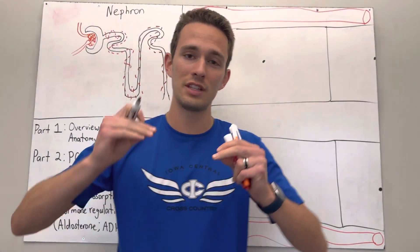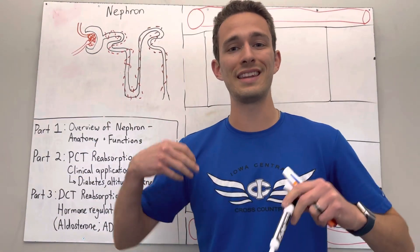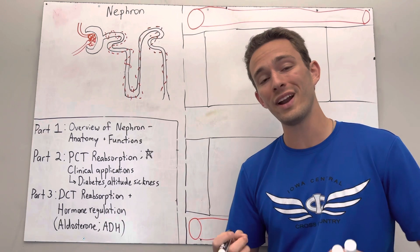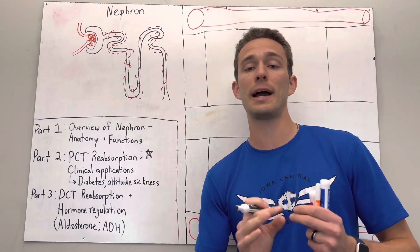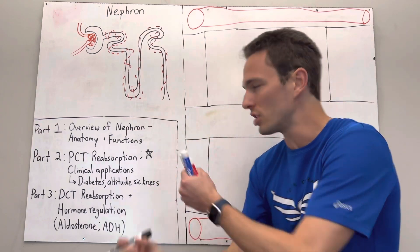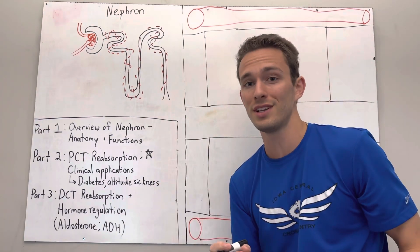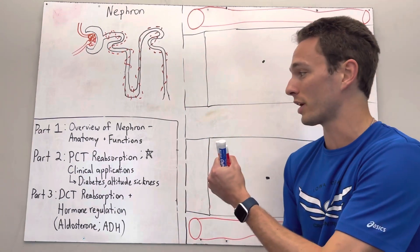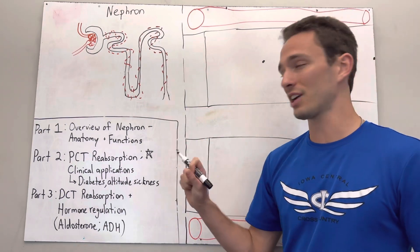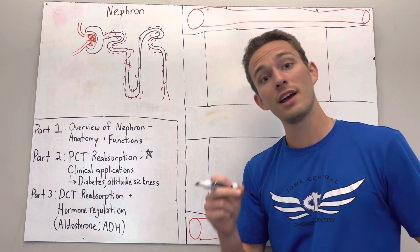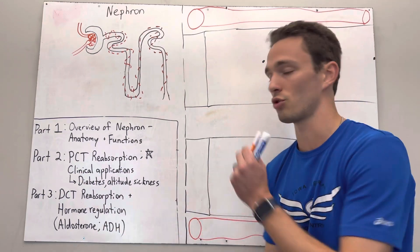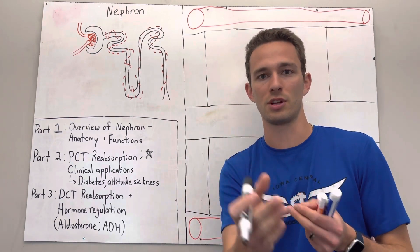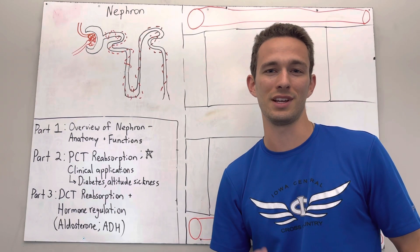What's up everybody, Mr. J here and this is the part two video covering the nephron and reabsorption. Today we are going to go through the proximal convoluted tubule, what is reabsorbed there, as well as some clinical applications — how we can take the physiology of reabsorbing different solutes and fluids and apply it to things like diabetes and altitude sickness. Check out the next videos where we'll cover the descending and ascending loop of Henle, then the distal convoluted tubule and hormone regulation.